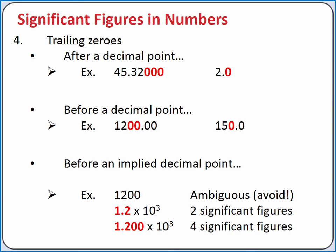So the number 2.0 has two significant figures. If the trailing zero occurs before an explicit decimal point, it is also significant. So the number 150.0 has four significant figures.